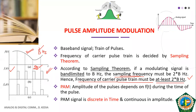Note the word 'at least' — this is the minimum frequency for the carrier pulse train. Also note the term 'band-limited': the modulating signal must have a limited bandwidth. The bandwidth of the modulating signal must be limited if you want to sample it.